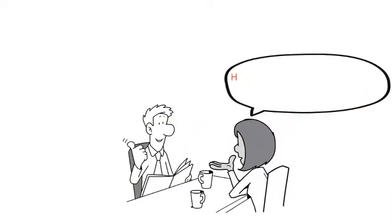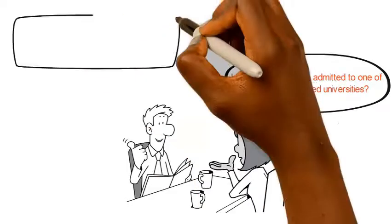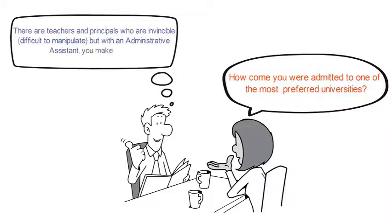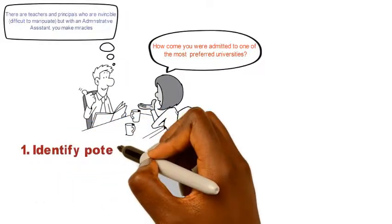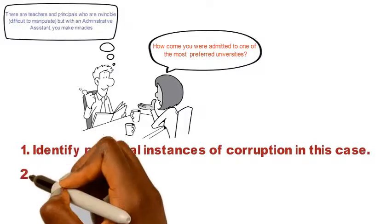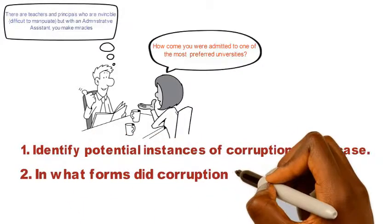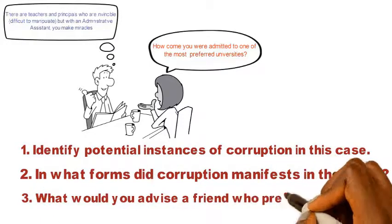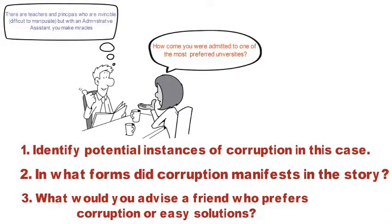Surprised, Ayelet asked his friend: how come you were admitted to one of the most preferred universities? Ibrahim replied: there are teachers and principals who are invincible, difficult to manipulate, but with an administrative assistant, you make miracles. Questions: Identify potential instances of corruption in this case. In what forms did corruption manifest in the story? What would you advise a friend who prefers corruption or easy solutions?